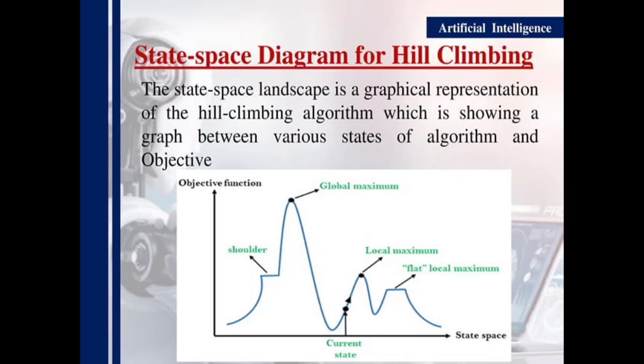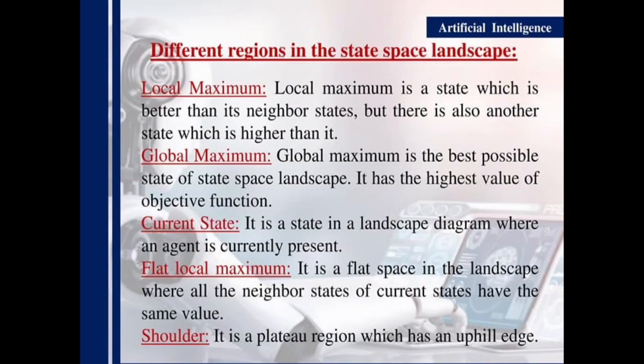A state space diagram for hill climbing: the state space landscape is a graphical representation of the hill climbing algorithm, showing a graph between various states of the algorithm and objectives. We are going to define in the next slide the different regions in the state space landscape.